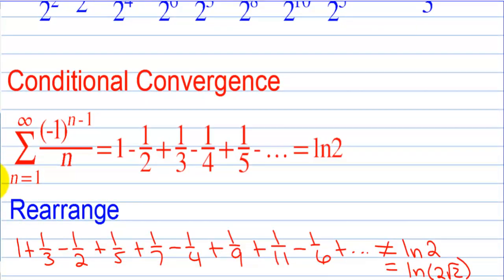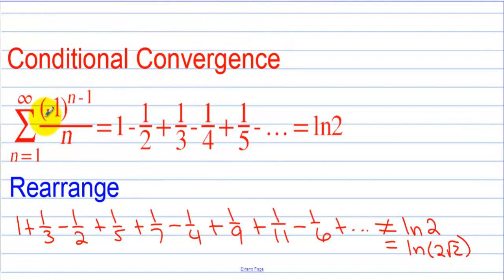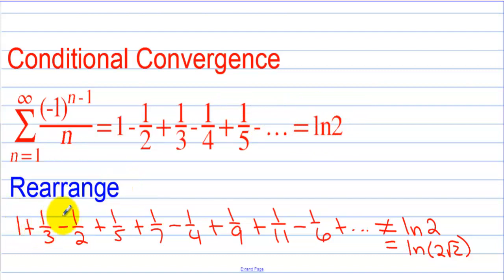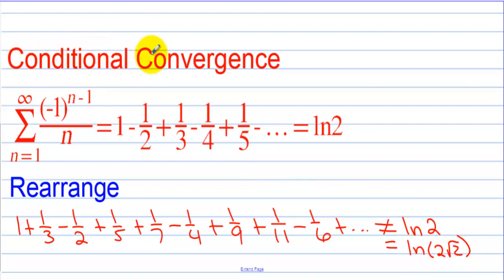Here we have a series that's only conditionally convergent. We have (-1)^(n-1) over n, that would be 1 minus 1/2 plus 1/3 minus 1/4 plus 1/5, and the sum is the natural log of 2. If we rearrange the terms — 1 plus 1/3 minus 1/2 plus 1/5 plus 1/7 minus 1/4 — adding 2 positives then subtracting a negative, the sum is not ln(2). The sum ends up being ln(2) times the square root of 2. So this one is only conditionally convergent.